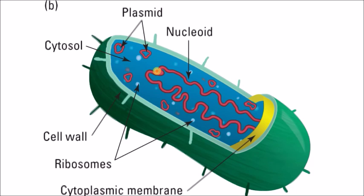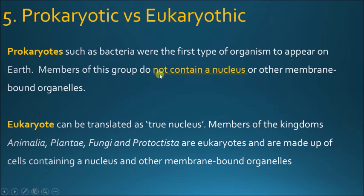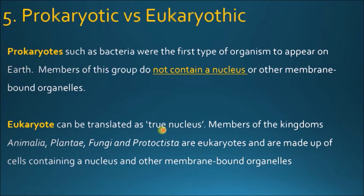You will have time to expand and learn more about these types of cells in class. The second type of cell I'd like to discuss with you is something we call eukaryotes. Eukaryotes are totally different from prokaryotes because they have a true nucleus, and they represent the vast majority of the kingdoms.